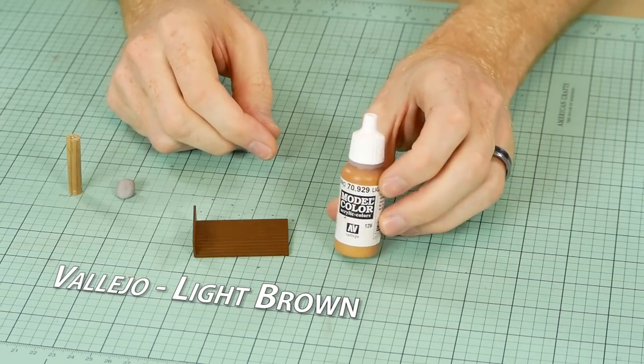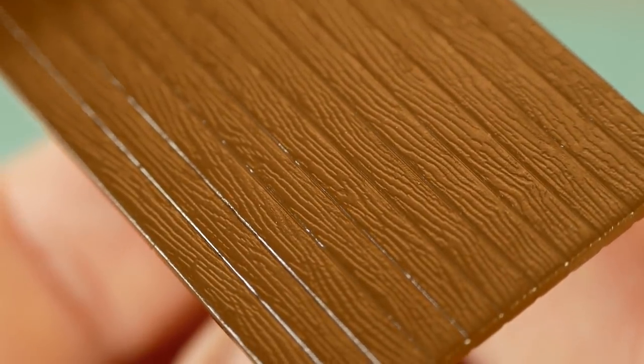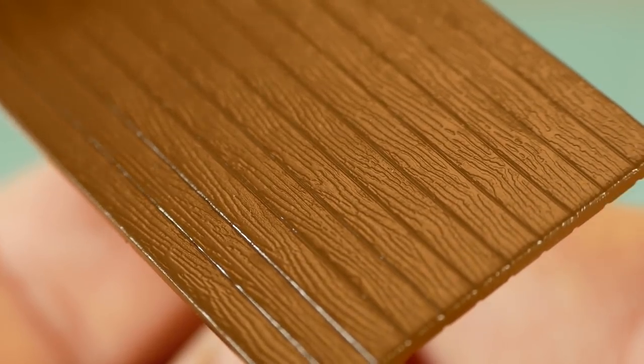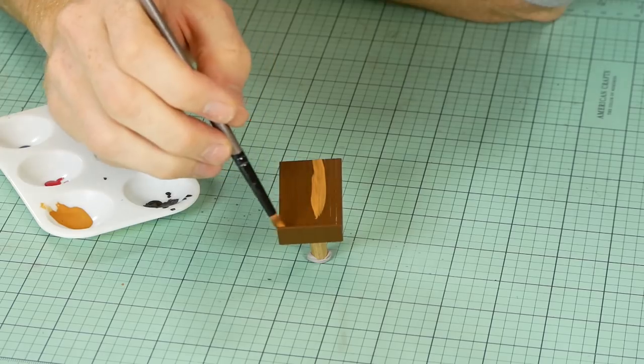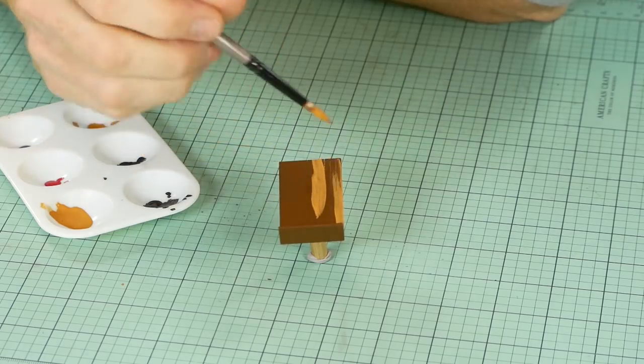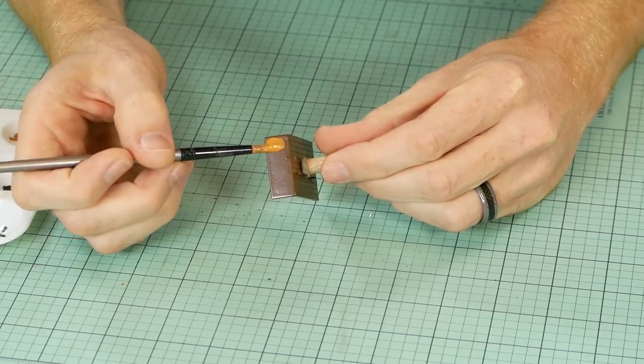If you've watched the pallets video then you'll notice the flatbed gets painted exactly the same way. The wood grain detail has already been molded into the flatbed, so it's simply a matter of applying a base coat of light brown. I ended up applying two coats and I generally try to apply the brush strokes in line with the grain.